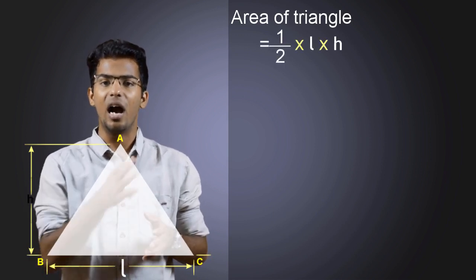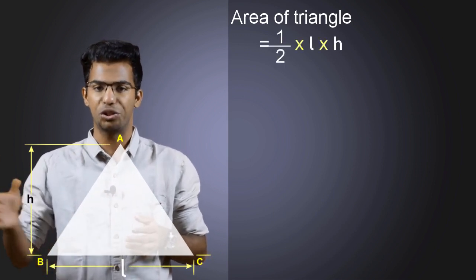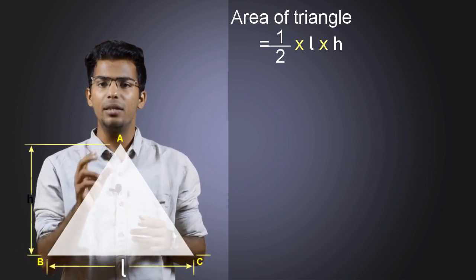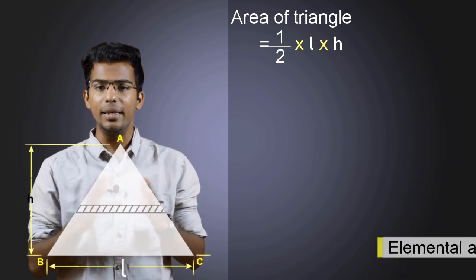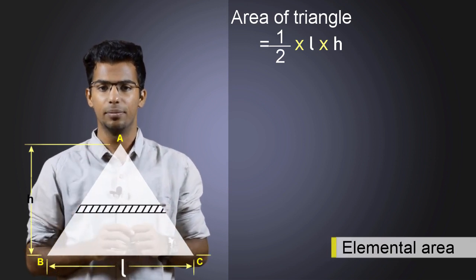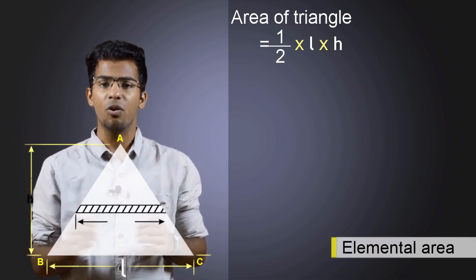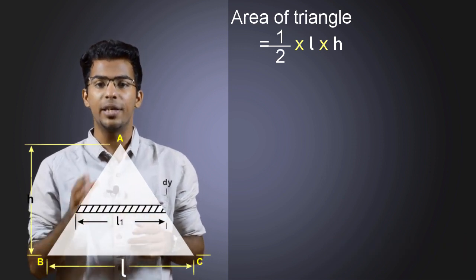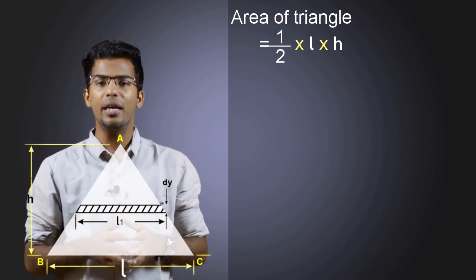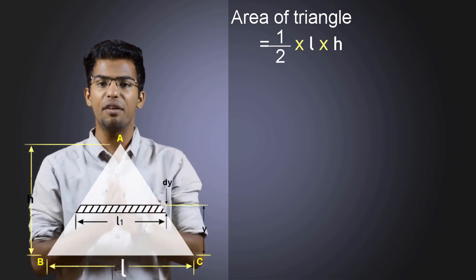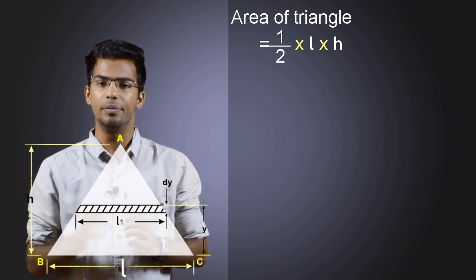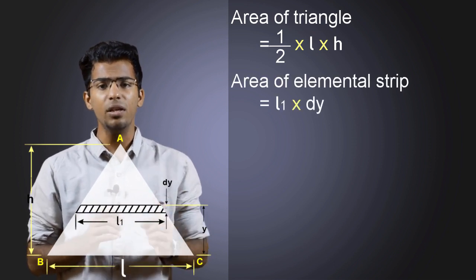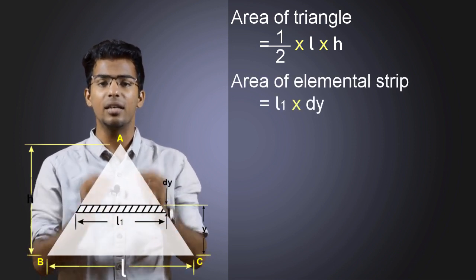In our case, the area will be half times L times H. The next step is to consider a small elemental strip or elemental area in this triangle. This small strip will have a length of L1 and height of DY. It will be at a distance of Y from the reference axis BC. The area of this small strip will be L1 times DY, as it is a rectangle.